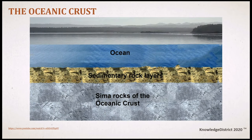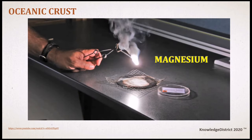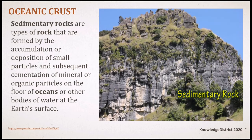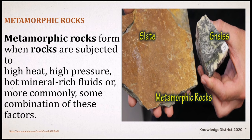Sima is the Earth's crust lower layer and contains rocks with lots of magnesium silicate minerals. Sedimentary rocks are formed by the accumulation or deposition of small particles and subsequent cementation of mineral or organic particles on the floor of oceans or other bodies of water. Metamorphic rocks started out as some other type of rock but have been substantially changed from their original igneous, sedimentary, or earlier metamorphic form through high heat, high pressure, mineral-rich fluids, or combinations of these factors.